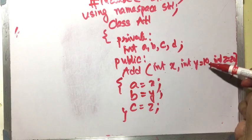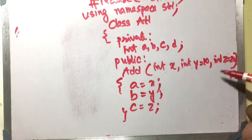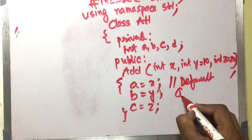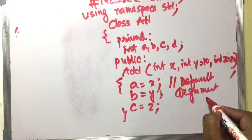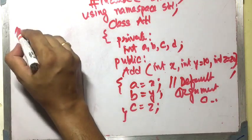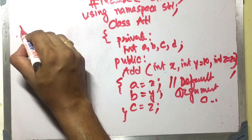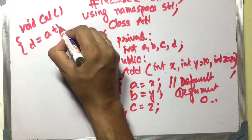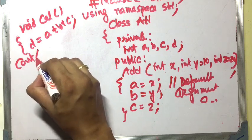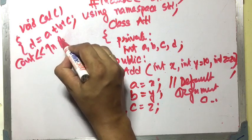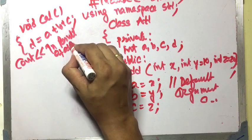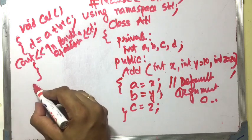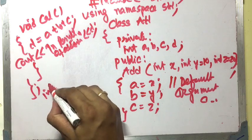There is also a void function called calculation. Inside it, d equals a plus b plus c. Then cout prints the result of addition followed by d, and then the calculation ends — that is the end of the class.